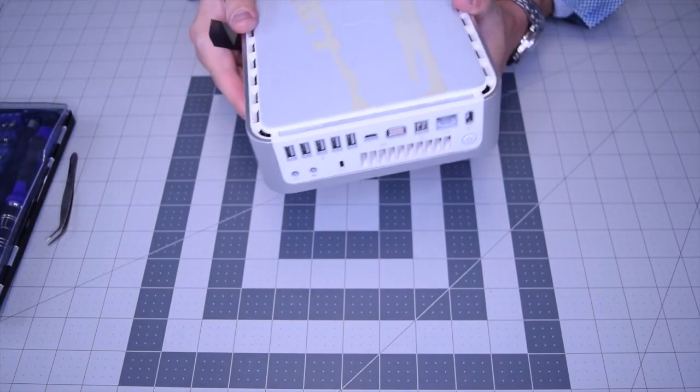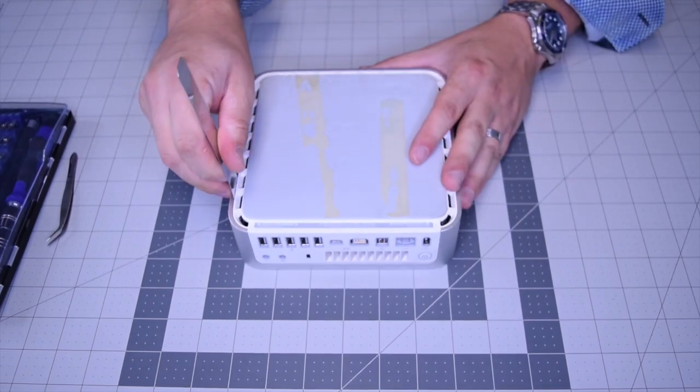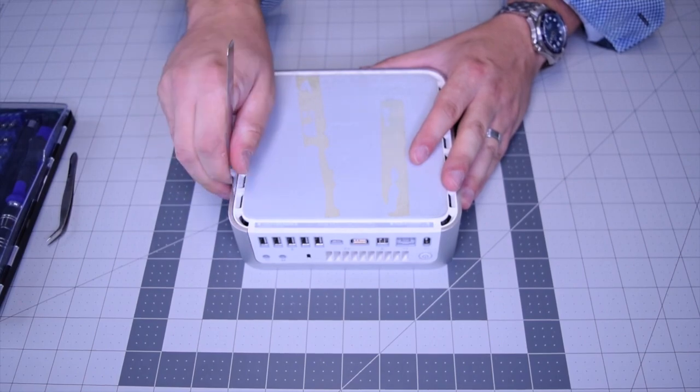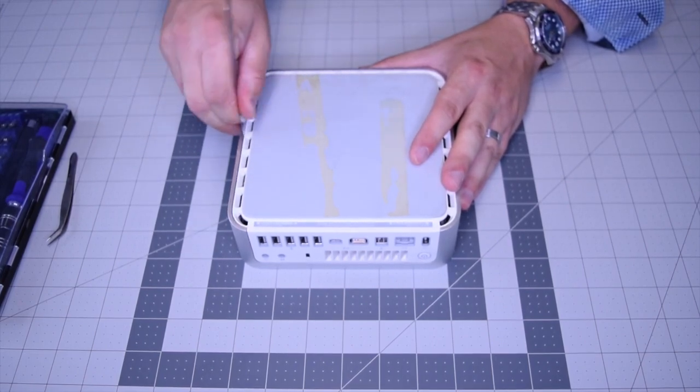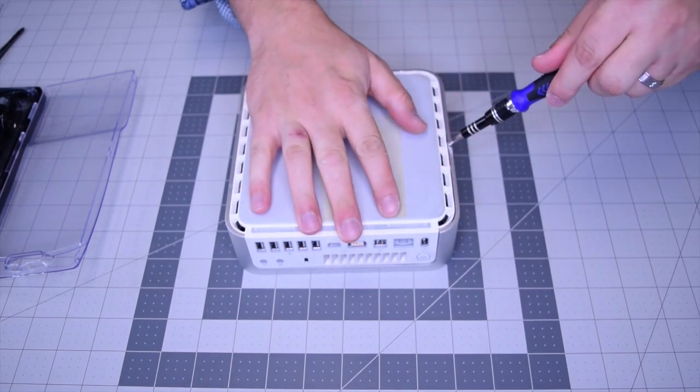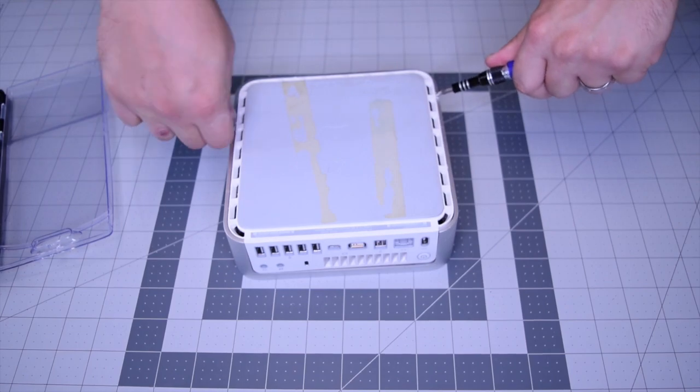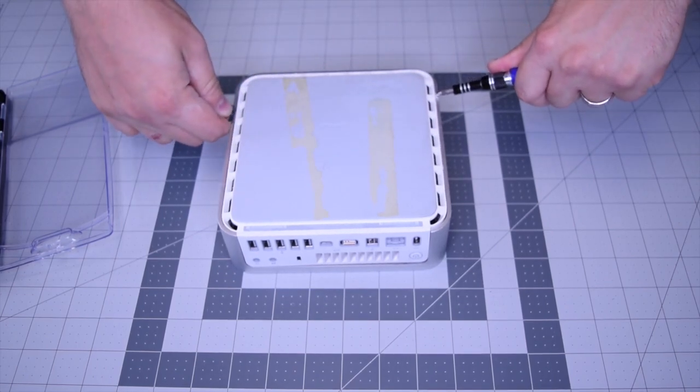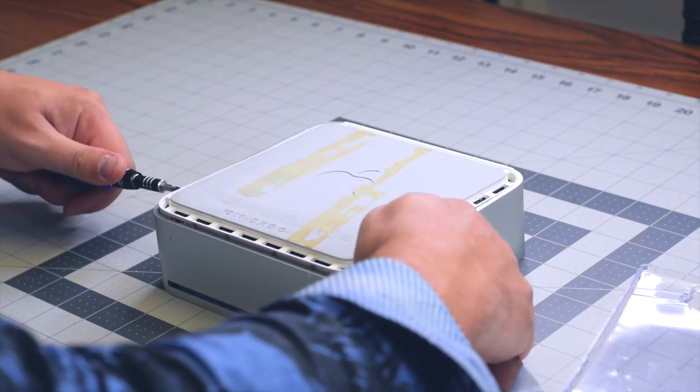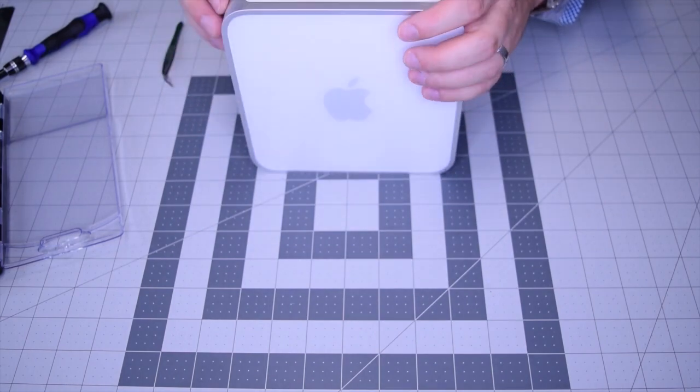Start by flipping over the Mac and prying into the seam on the right side. We're going to need to pry in from both sides, so use the flat-headed screwdriver as a prying tool to come in from the opposite side. Work your way in and apply pressure - we need to kind of bend the case a little bit and push out the frame.